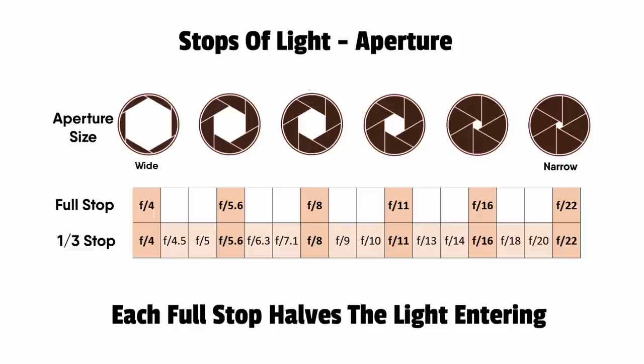Most cameras are set to work in third-of-a-stop increments. If you turn the dial from f5.6, it goes 5.6, 6.3, 7.1, then 8. So f5.6 to f8 is one full stop, but f5.6 to f6.3 is a third of a stop, and 7.1 is another third. The reason we work in thirds is it gives you finer control — sometimes one full stop can make the image too bright or too dark, and a third allows a more gradual change in exposure.